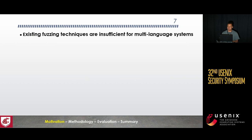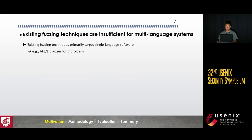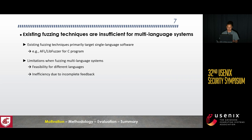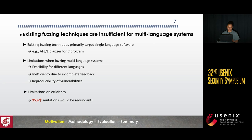However, existing fuzzing techniques are insufficient for multi-language systems. There can be feasibility issues to support different languages, and coverage feedback may be incomplete. There can also be reproducibility issues for discovered vulnerabilities. Moreover, another challenge is about efficiency — our studies found that over 95 percent of mutations will be redundant if we simply use random mutation strategies.